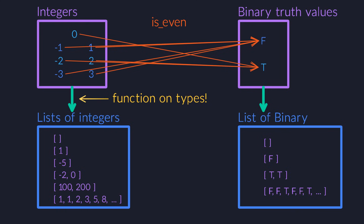It takes the entire integer type and turns it into a new type. It operates on the level of the types themselves — it's a function on types. This is why I said we are now at the next level of category theory: we are treating entire types as if they were values. This makes functors incredibly powerful.